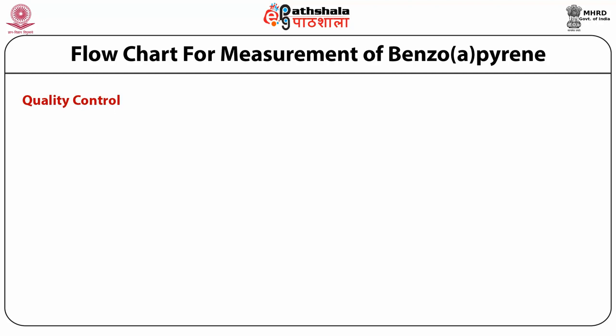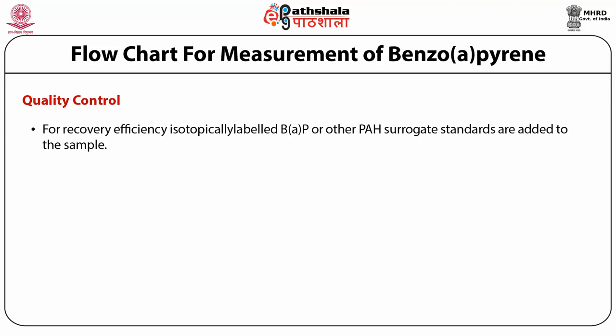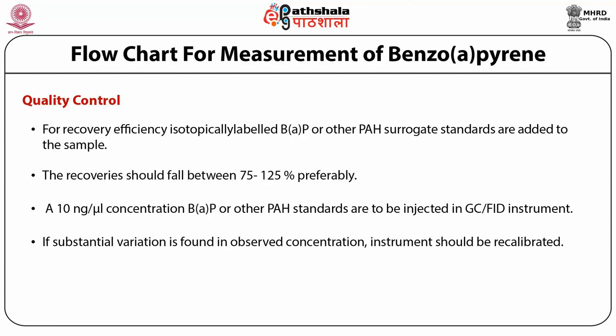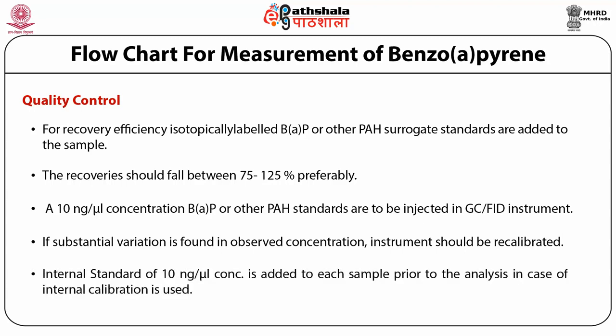For quality control, isotopically labeled benzopyrene or other PAH surrogate standards are added to the sample prior to extraction and analysis. Recovery should fall between 75 to 125%. A 10 ng per microlitre concentration of benzopyrene or other PAH standards is injected in GC-FID with every batch of samples or daily as a control. If substantial variation is found in observed concentration, the instrument should be recalibrated. An internal standard of 10 ng per microlitre concentration is added to each sample prior to analysis when internal calibration is used.